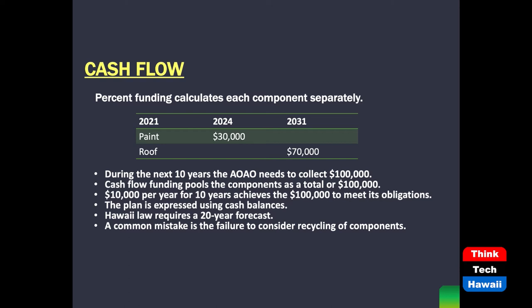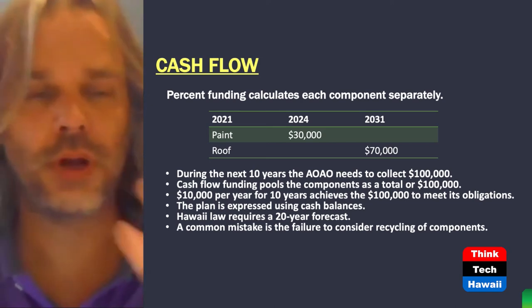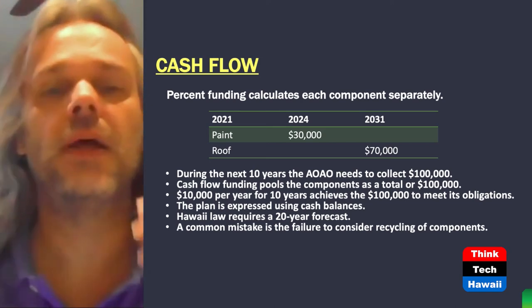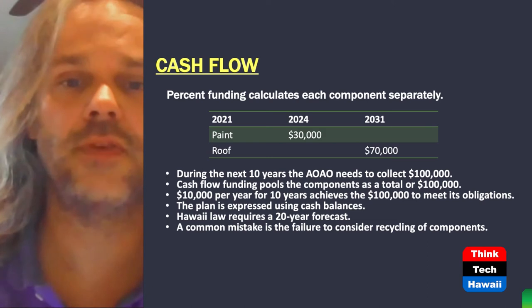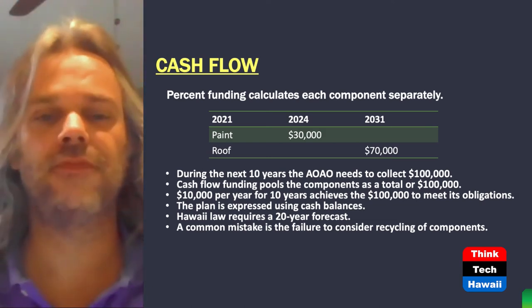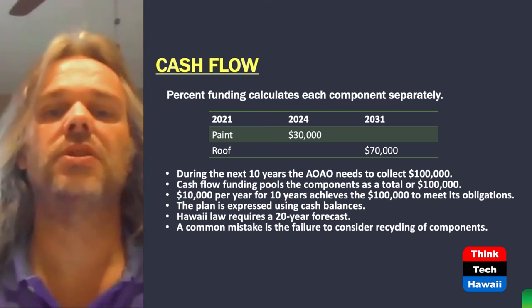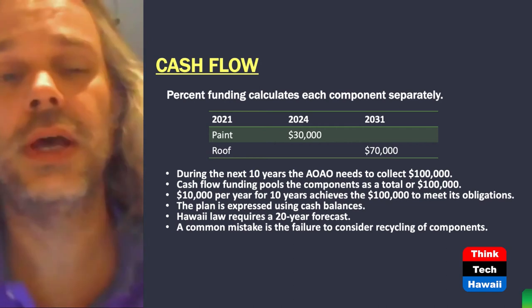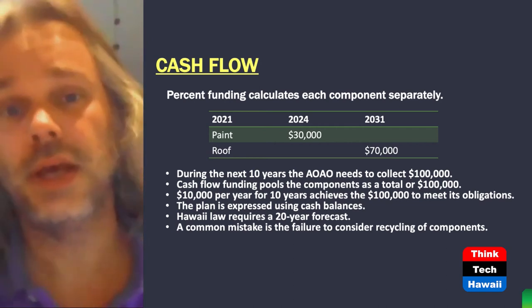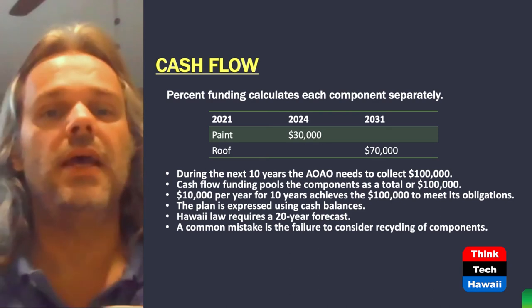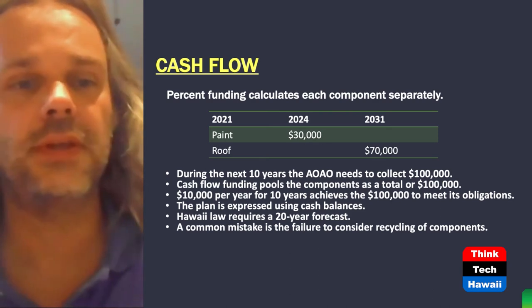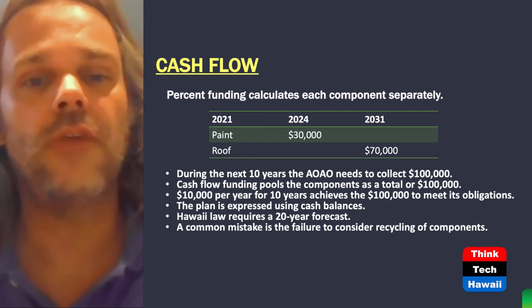Utilizing the cash flow method, you pool those funds together into essentially one reserve fund broken up into multiple CDs, multiple money markets, things like that. You pool those funds and disperse them as components come due or reach their useful life. Using the same example — painting in 2024 for $30,000, and roofing in 2031 for $70,000 — you have a total of $100,000 to collect over 10 years. At year three you need $30,000, so you collect $10,000 over the next three years. Then from that third year through the tenth, you have seven additional years to collect the remaining $70,000 for the roofing project.